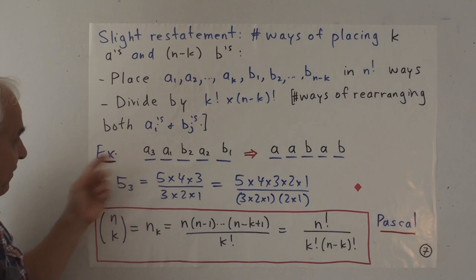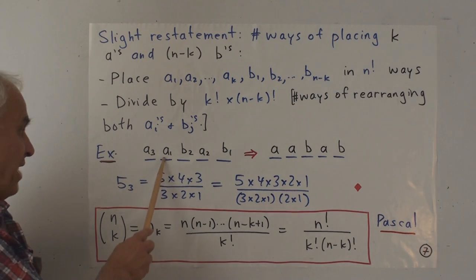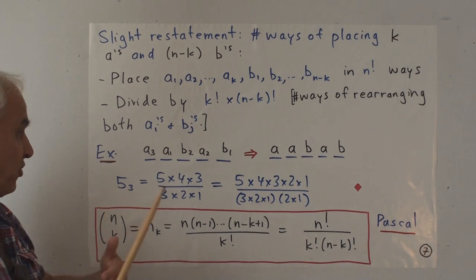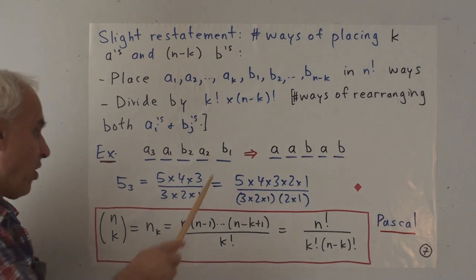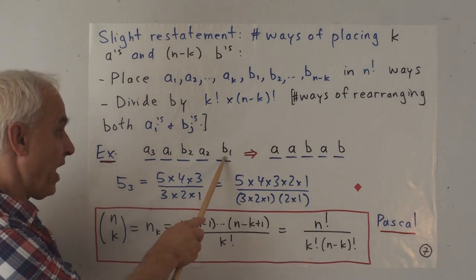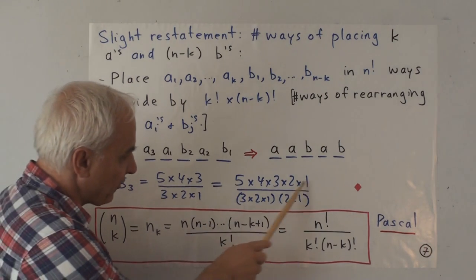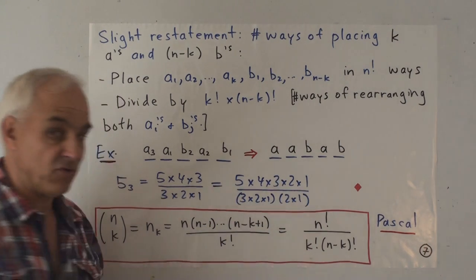So, for example, in that previous example here, we had the a1, a2, a3, and we made those choices. Then to complete the thing, we could also choose a b1 to go there and a b2 to go there. So all five places are now represented by this factorial all the way from 5 to 1.